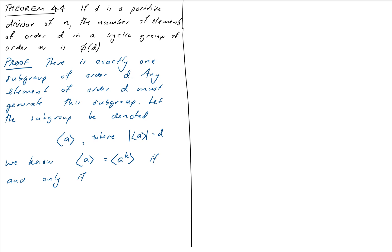Remember, the two elements are generators if and only if they're relatively prime to the order of the group. Now the group in question is the subgroup that we're talking about here. So from our theorem 3.4.2, the N from that theorem is going to be D here, the order of the subgroup in question. And so we know that the GCD of K and D equals 1. And there are phi of D of these elements. And that proves the theorem.